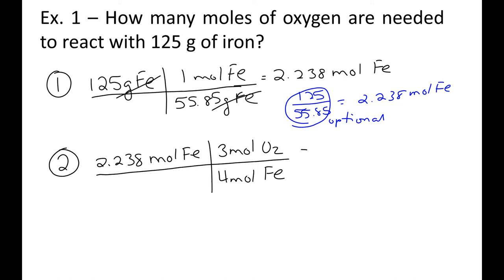Moles of Fe cancel out. Now, this is 2.23. Actually, let's use a different color with this one. I'm going to use the blue in the middle. Blue means it's optional. If I can erase all this. Okay. So we're going to put 2.238 times 3 divided by 4. As I said, this step is optional. So here and here are both optional steps. You don't have to do them. And then when you multiply this out, you get 1.68 moles of O2.